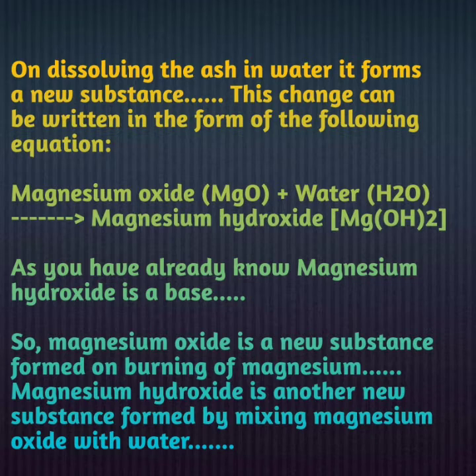जब हमने magnesium burn किया, तो उसने magnesium oxide बनाया. और जब magnesium oxide को water में mix किया, तो magnesium hydroxide बना. पूरी activity में हमने देखा कि जब magnesium को burn किया तो magnesium oxide मिला, जिसका chemical composition बिलकुल different था magnesium strip से. और आगे magnesium oxide में water mix करने पर magnesium hydroxide बना. Magnesium oxide और magnesium hydroxide दोनों का chemical composition different था.